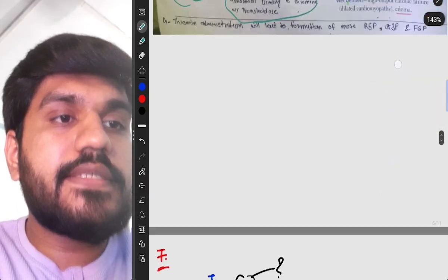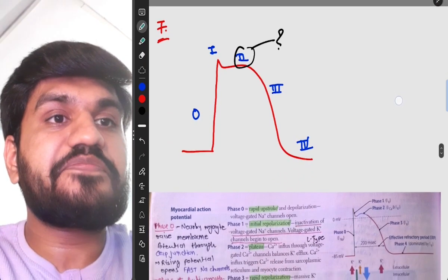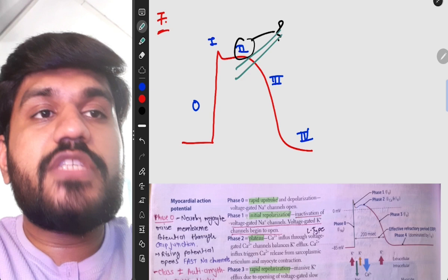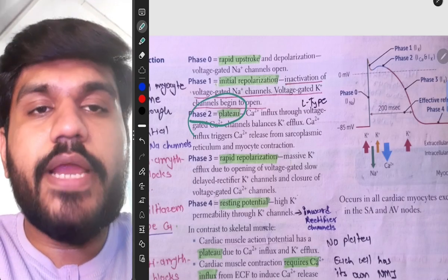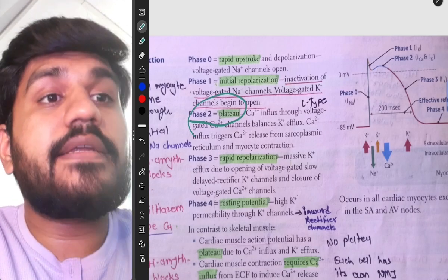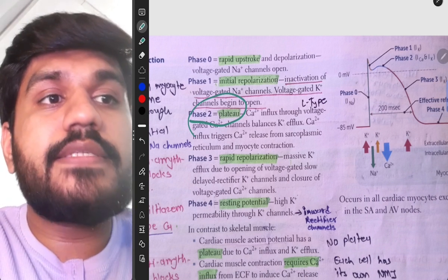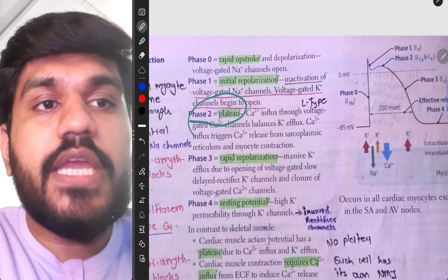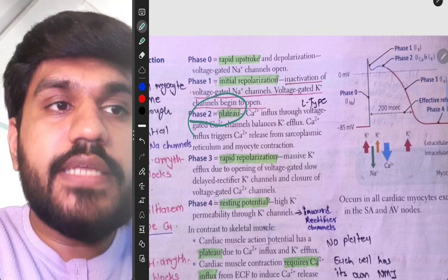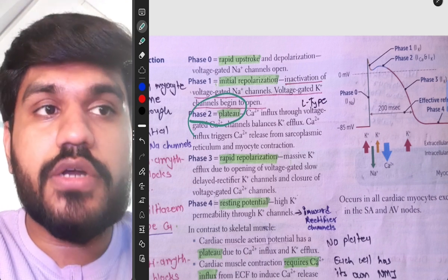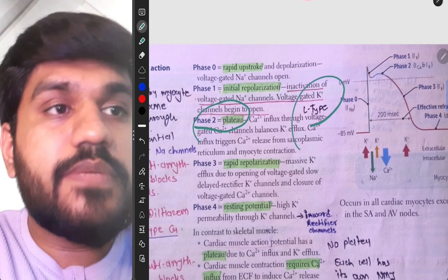Now we are going to move on to another question and that is our this graph. In this, the second number was asked what is phase 2. And this phase 2 is plateau. And in plateau what happens is that calcium influx through voltage gated calcium channels balances the potassium efflux. Calcium influx triggers calcium release from sarcoplasmic reticulum and myocyte contraction occurs.